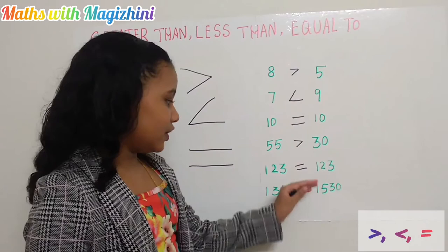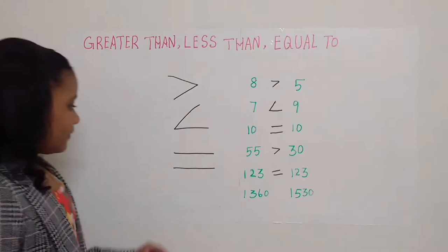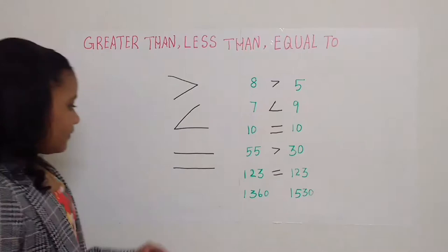1360 is what to 1530? Hmm, what could that be? Aha! 1360 is less than 1530.